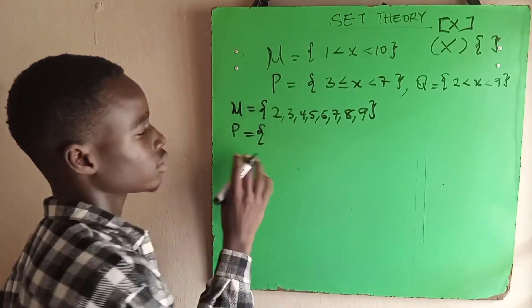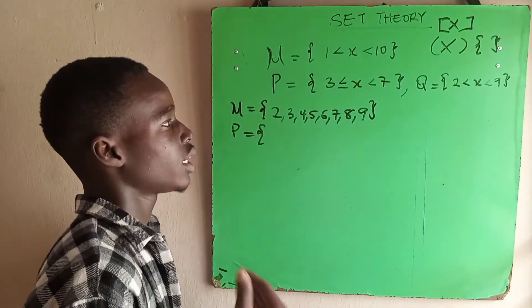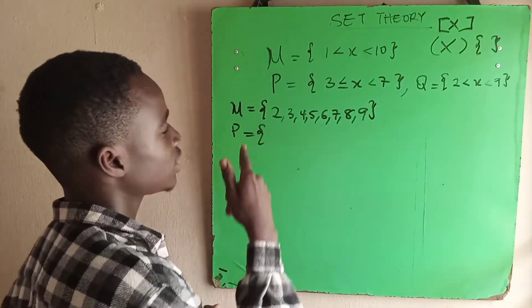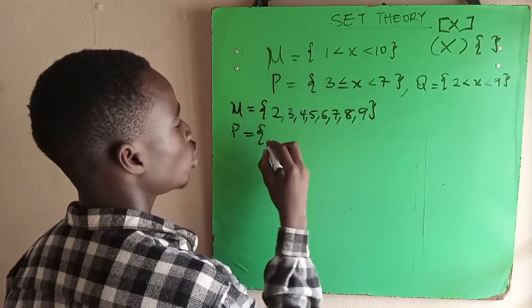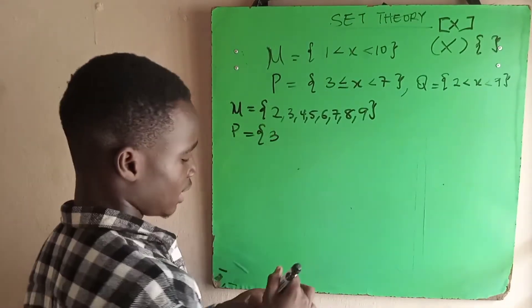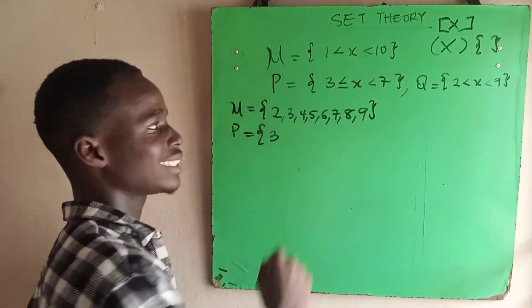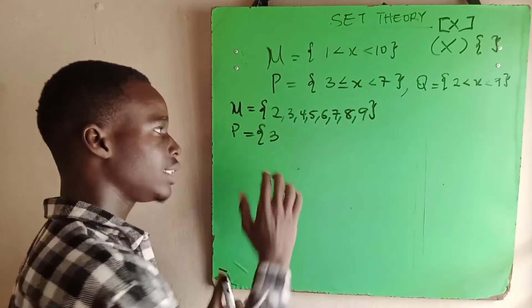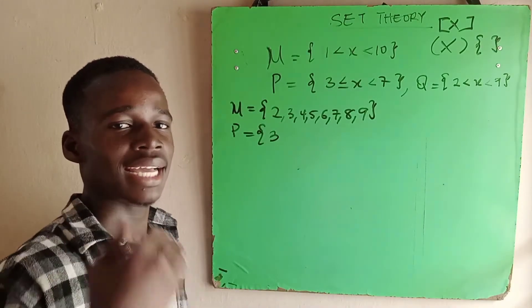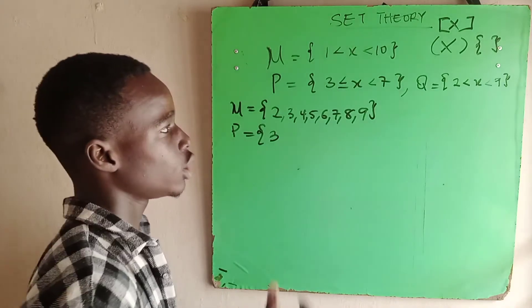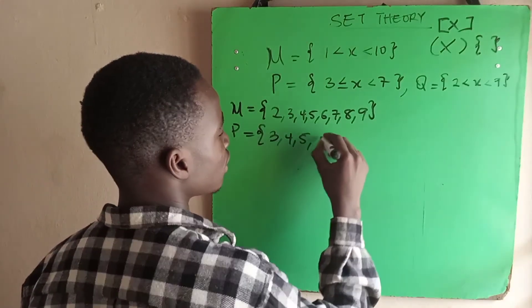Moving to P, we write our curly bracket. x is greater than or equal to 3, which means in this set we can find 3 because we have been given a condition equal to. Then looking at the second condition, x is less than 7, which means we will not find any element that is 7 or above. So we have 3, 4, 5, 6.